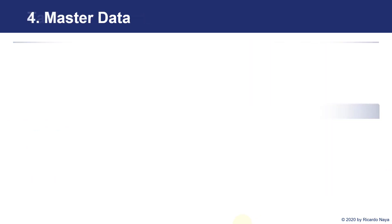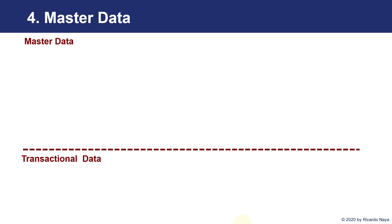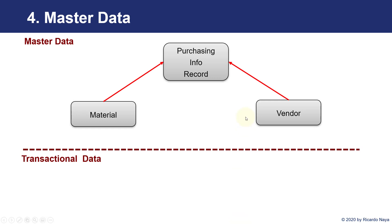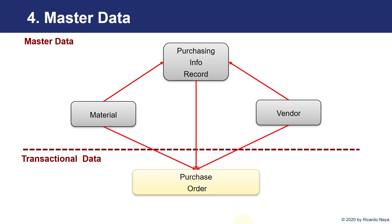Finally, we have master data and transactional data. The main master data in purchasing is going to be materials — we need to tell the system which material we are going to procure — and the vendor, from which we are going to procure them. There is another master data object called purchasing info records, where we store information related to a material and vendor combination. For instance, one material can be procured from different vendors, with different purchasing info records storing different prices, delivery times, or lead times. All of this information is going to be used in the transactional data, and the main transactional data for sourcing and procurement is the purchase order.